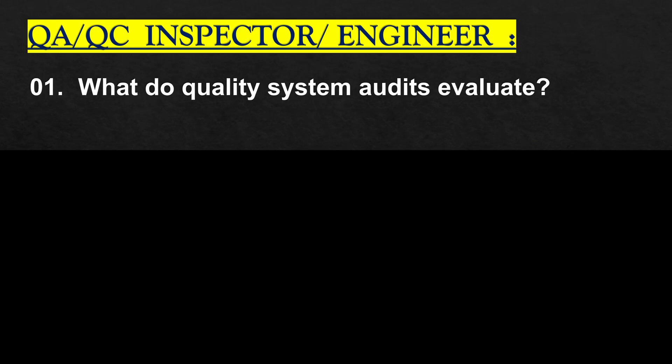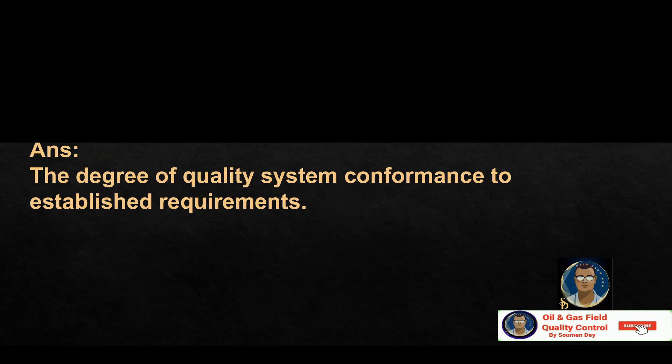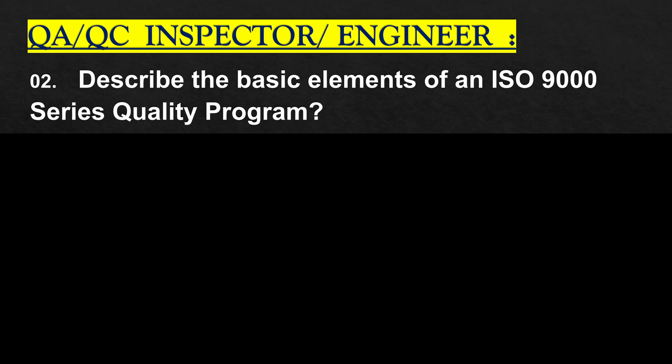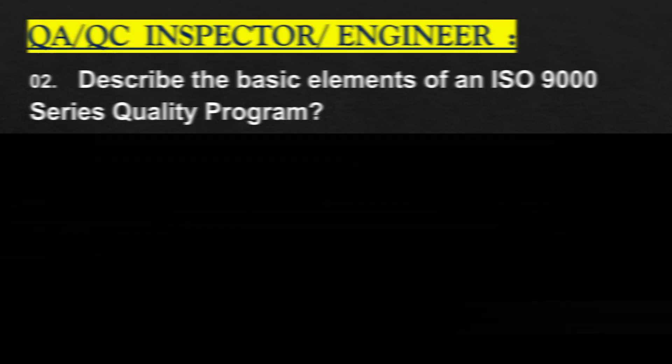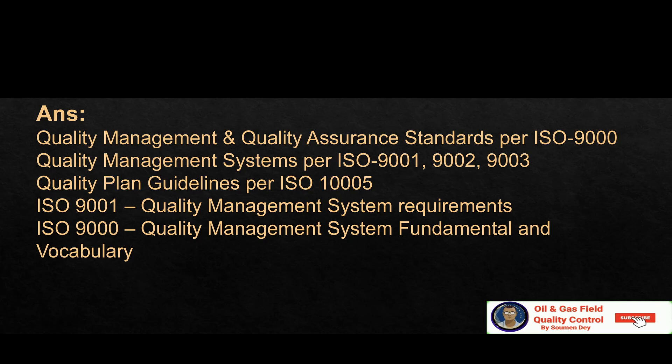What do quality system audits evaluate? The degree of quality system conformance to the established requirement. Describe the basic elements of an ISO 9000 series quality program: quality management and quality assurance standards per ISO 9000; quality management systems per ISO 9001; quality plan guidelines for ISO 10005; Schedule Q from the client describes minimum requirements of a contractor quality system; ISO 9001 covers quality management system requirements and fundamentals and vocabulary.